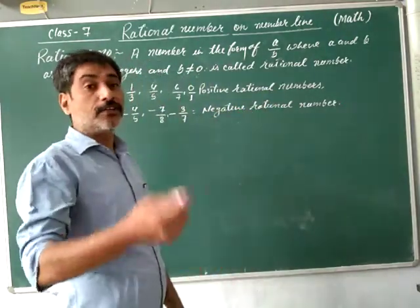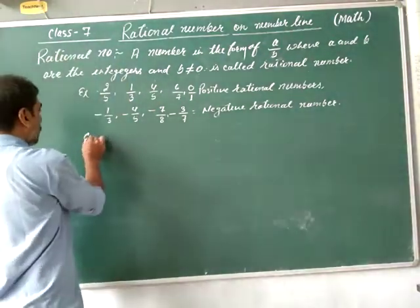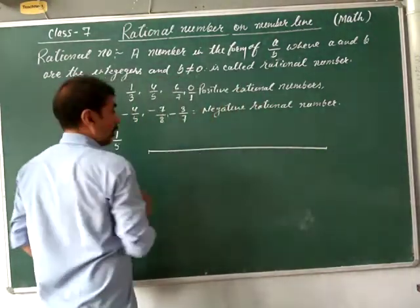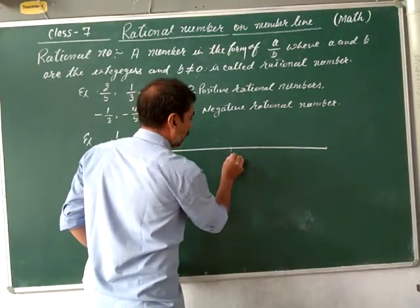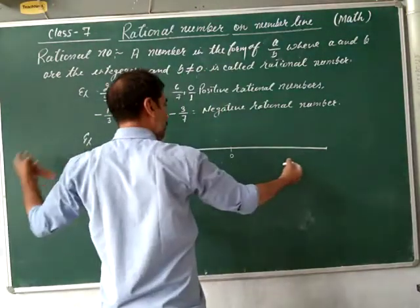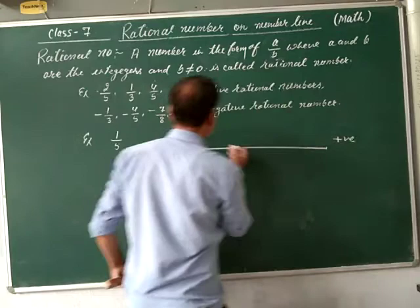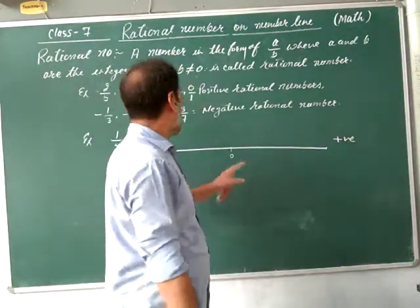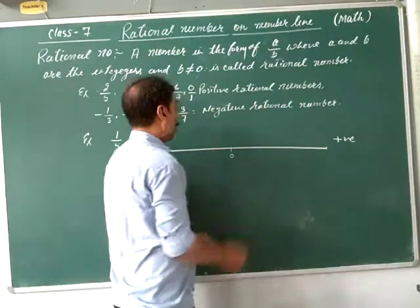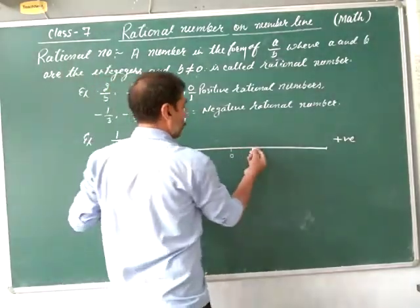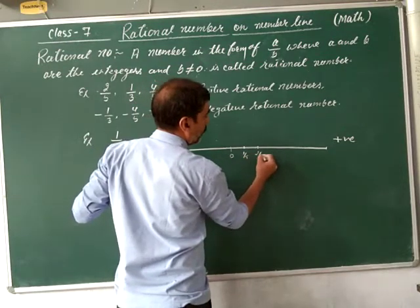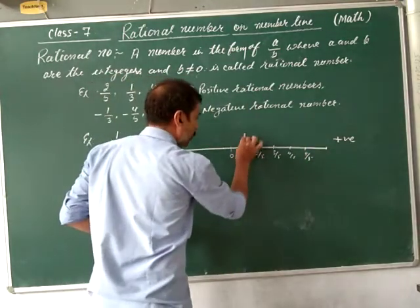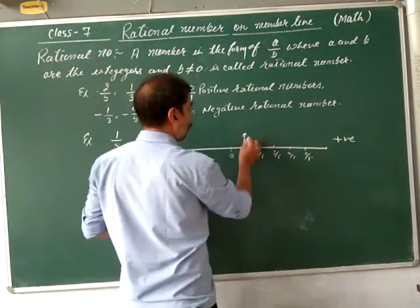Now, how to represent a rational number on the number line. For example, 1 by 5. First, draw a number line. The right side is positive and the left side is negative. Since 1 by 5 is a positive number, it is on the positive side from 0. Divide the space into 5 equal parts: 1 by 5, 2 by 5, 3 by 5, 4 by 5, 5 by 5. This point represents 1 by 5.